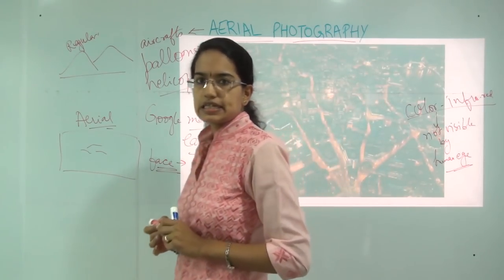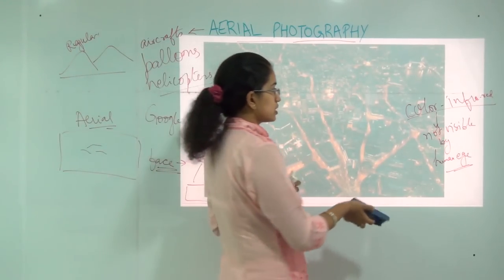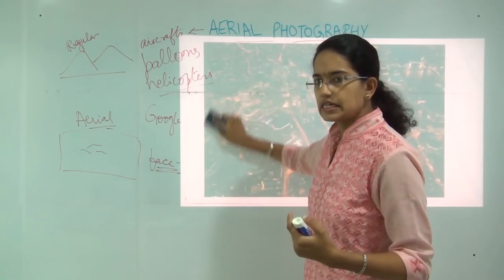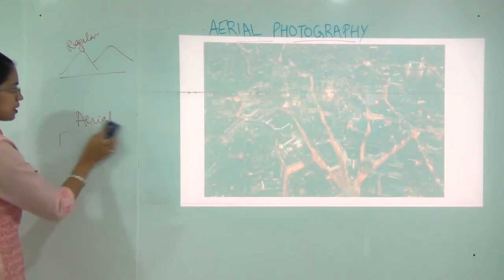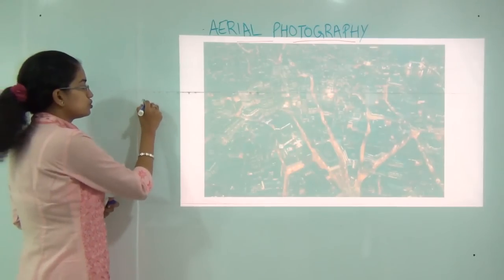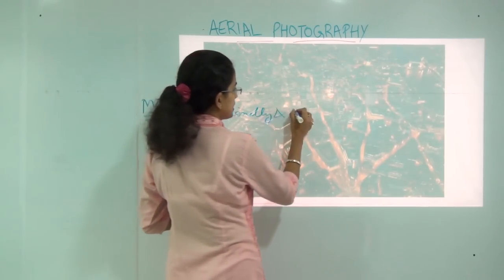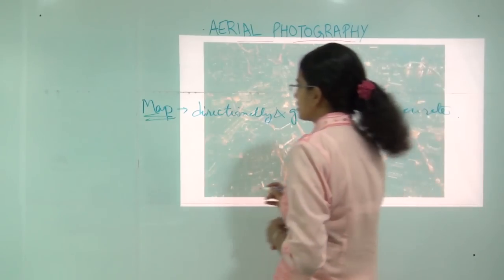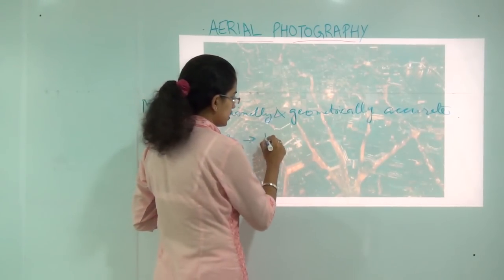Let's talk about the difference between a map and an aerial photograph, and why we nowadays focus more on aerial photographs rather than maps. A map is something where we project a three-dimensional surface onto a two-dimensional sheet. A map is usually directionally and geometrically much more accurate. In contrast, an aerial photograph has a huge amount of radial distortion.